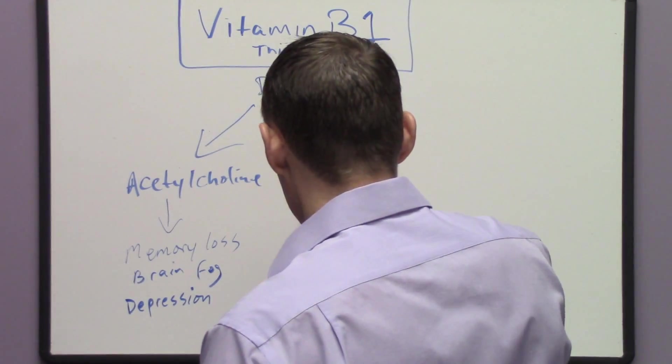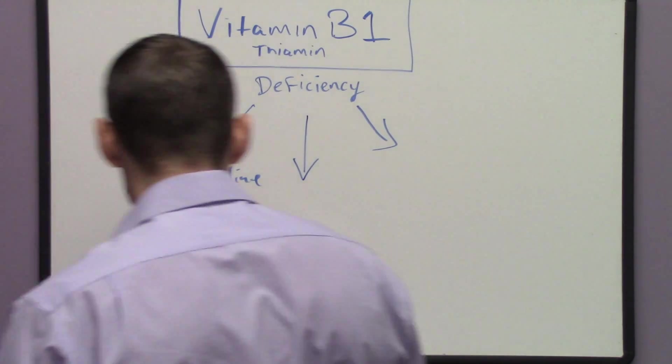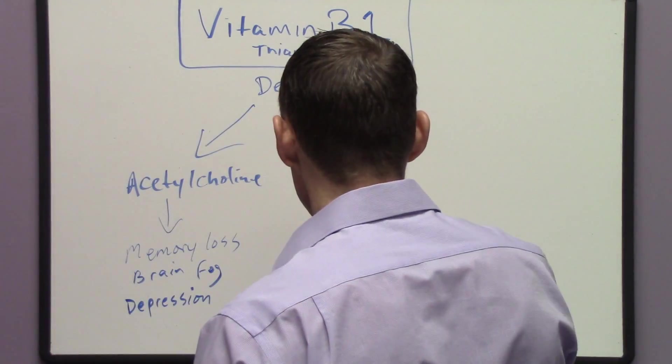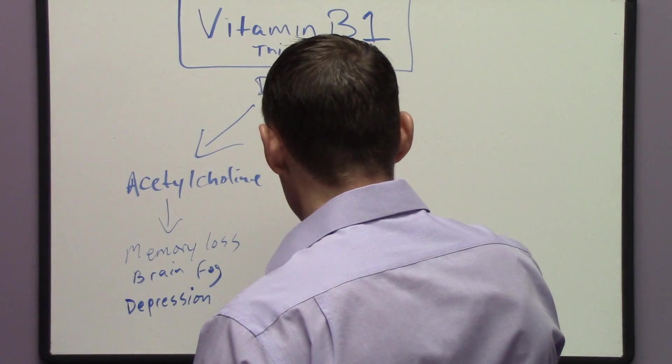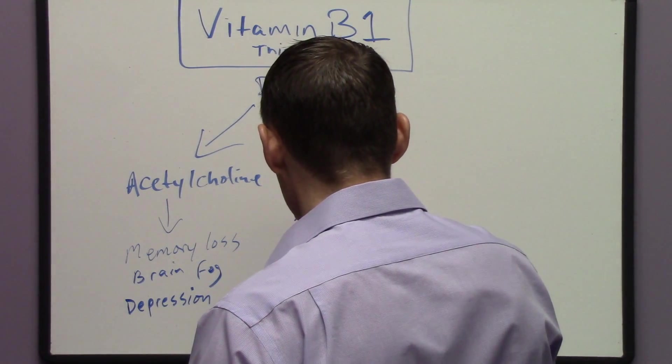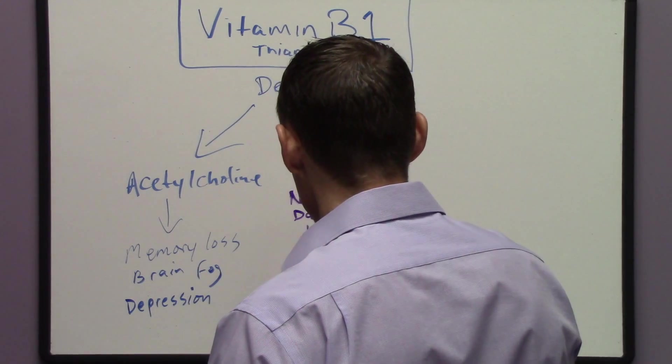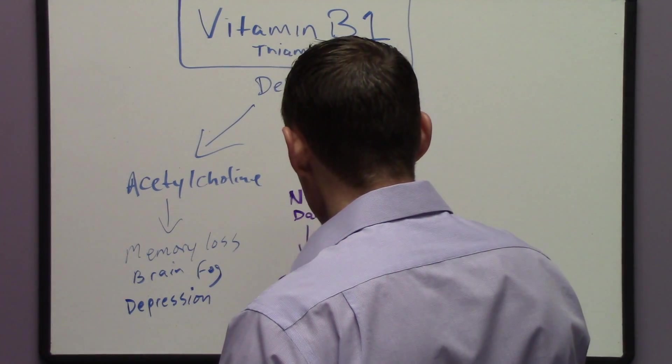One of the other components to vitamin B1 deficiency that also affects the nervous system has to do with generalized nerve damage itself. Vitamin B1 is necessary for the maintenance of nerve cells, and so it can actually trigger what looks like or appears to be seizure disorder.